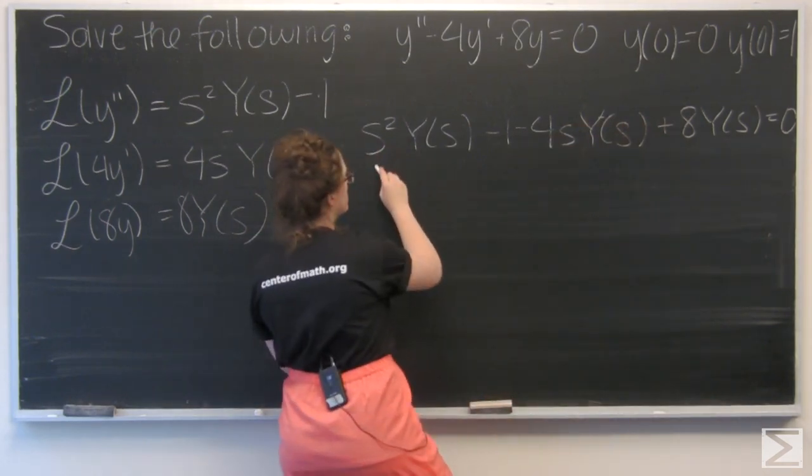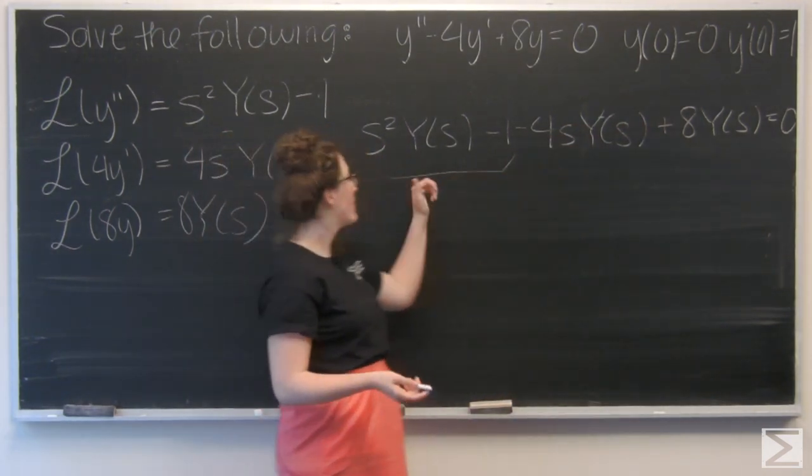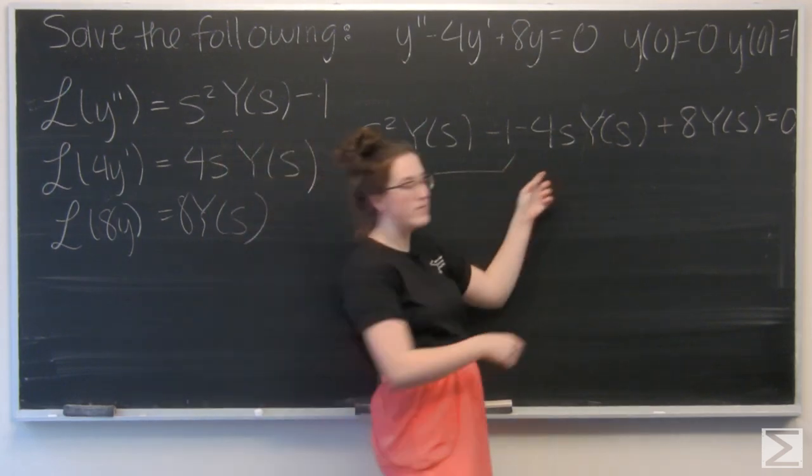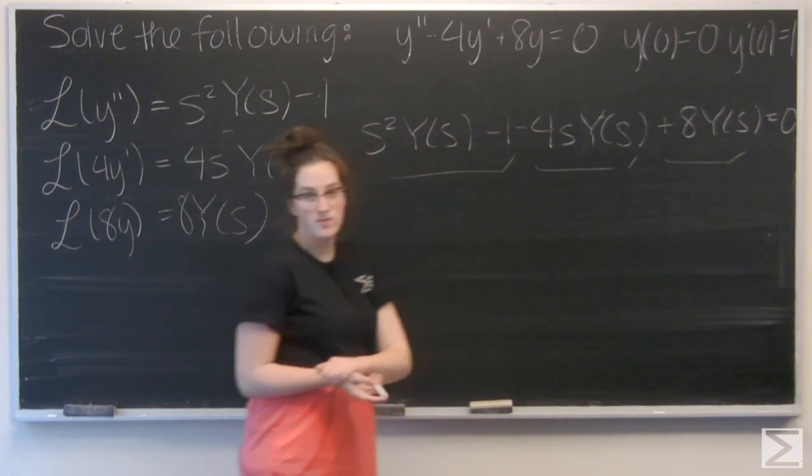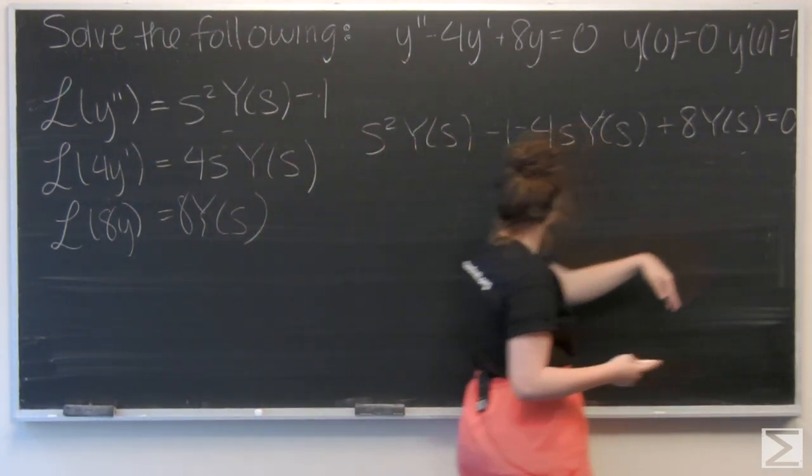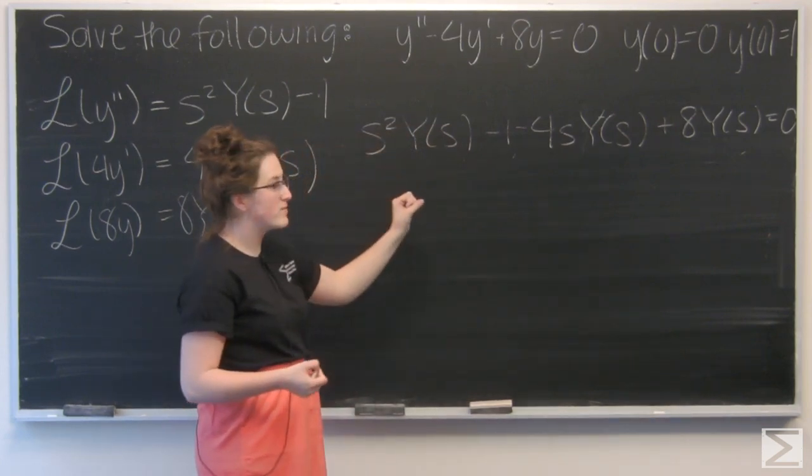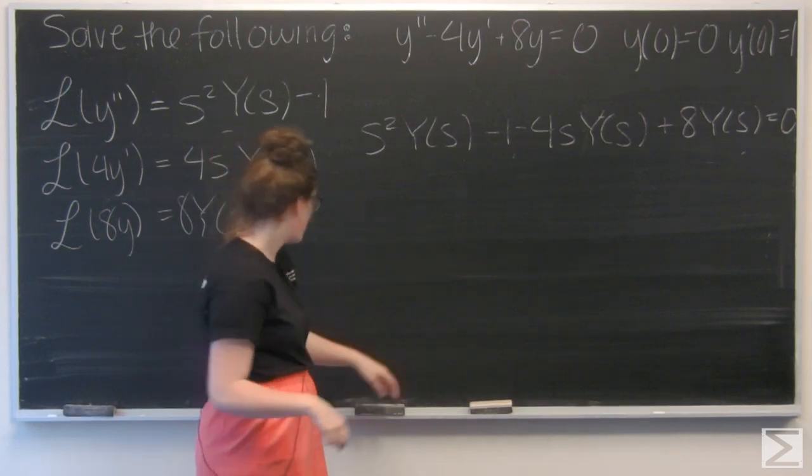So I have y'' minus 4y' plus 8y equals 0. So I want to solve for Y(s), and the easiest way to do that is to get all the Y(s) terms on one side. So first I need to move this negative 1 over to the other side.